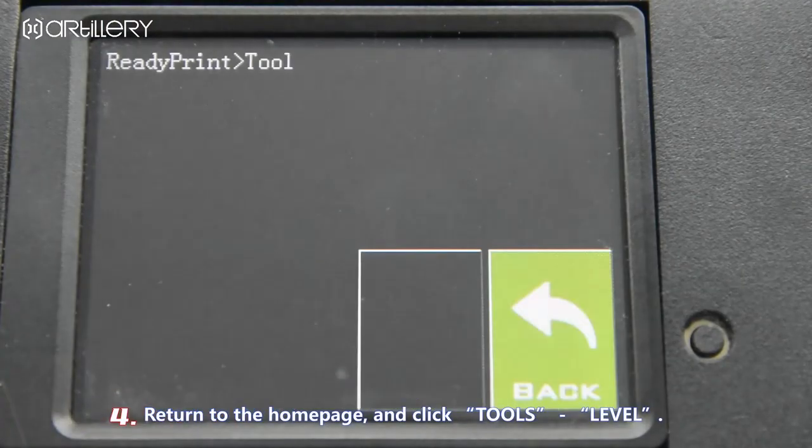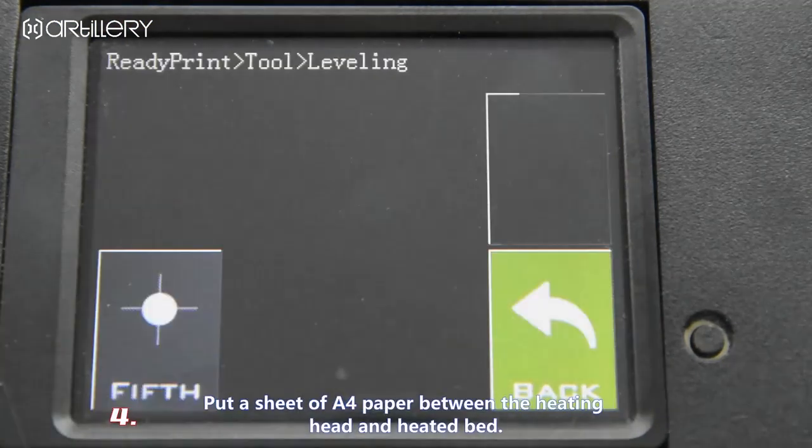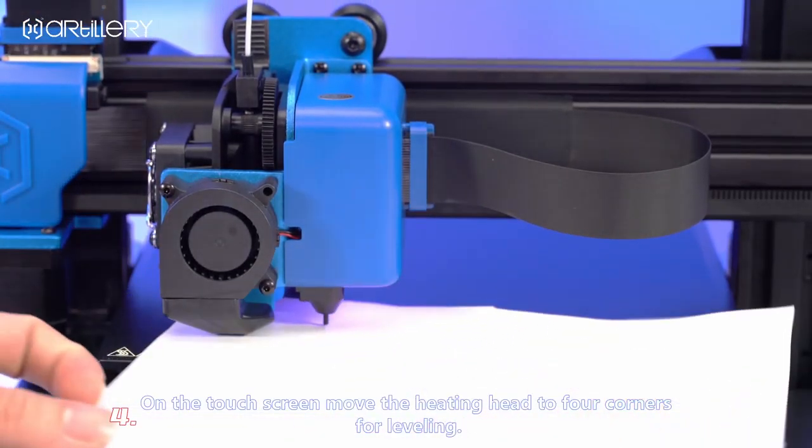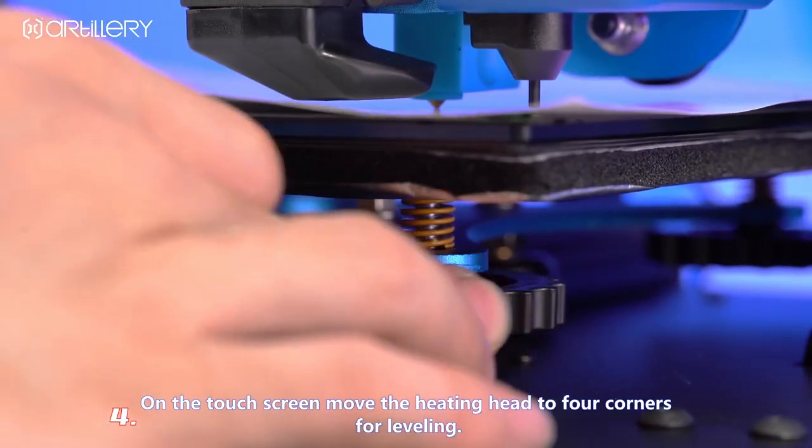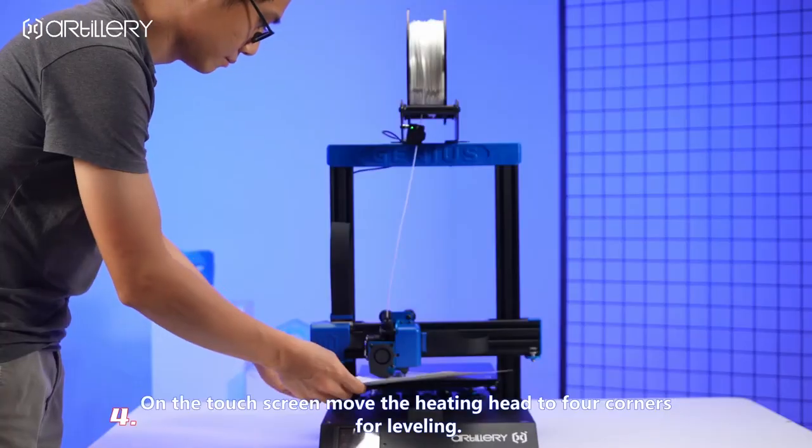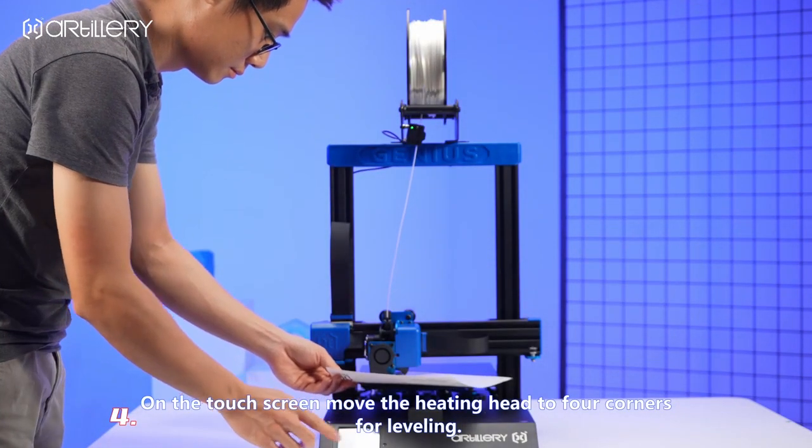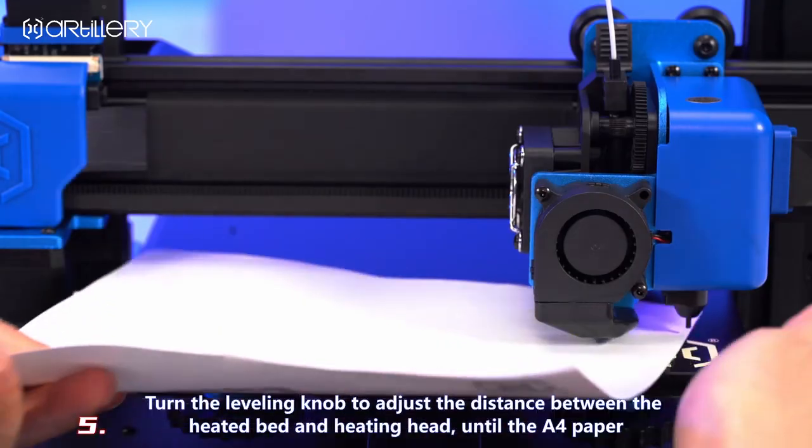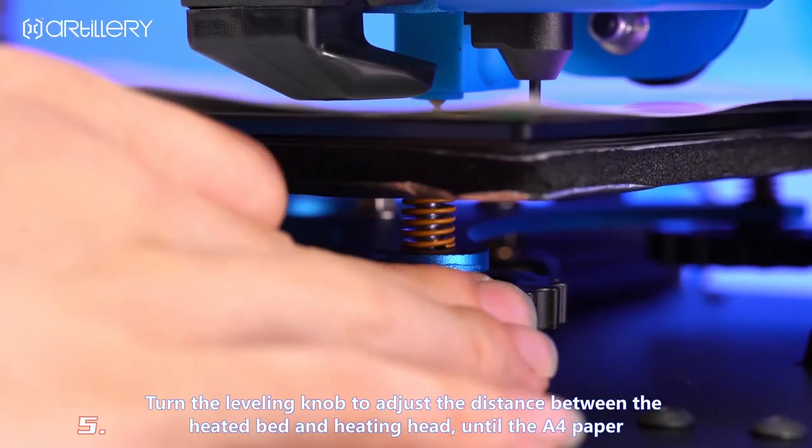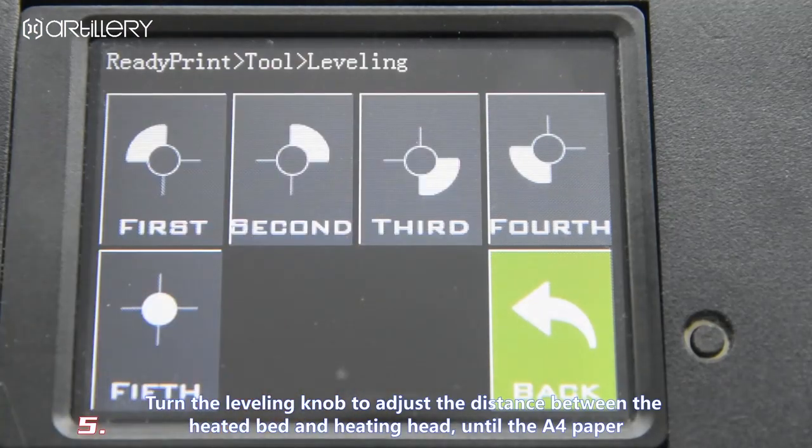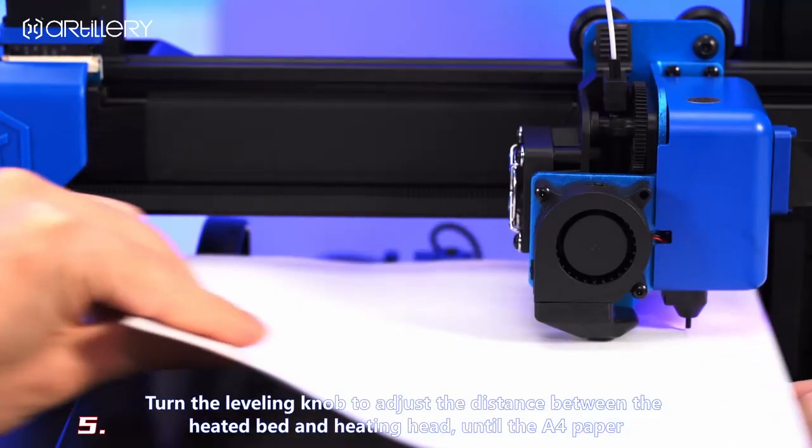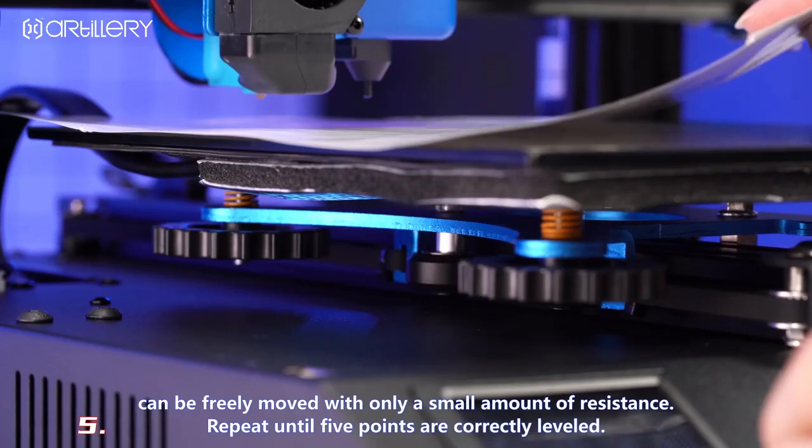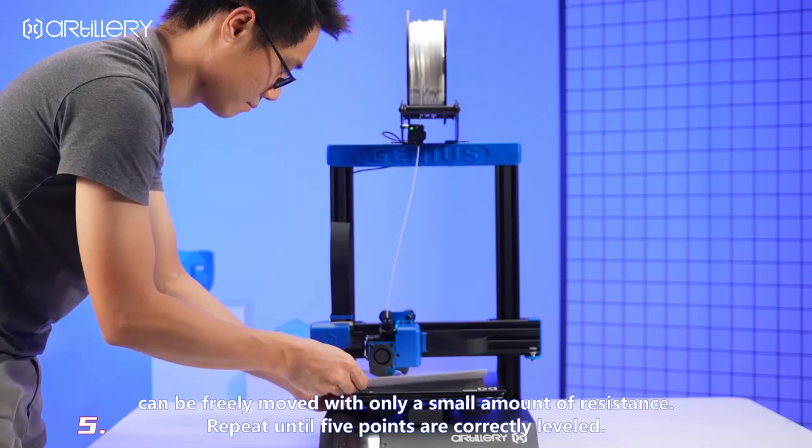Return to the home page and click, choose, manual leveling. Set a sheet of A4 paper between the heating head and heated bed. On the touch screen, move the heating head to four corners for leveling. Turn the leveling knob to adjust the distance between the heated bed and heating head until the paper can be freely moved with only a small amount of resistance. Repeat until five points are correctly leveled.